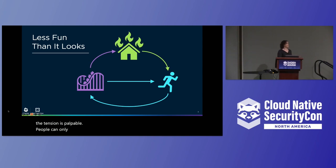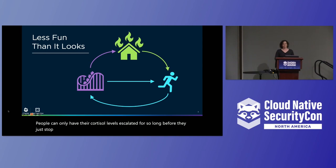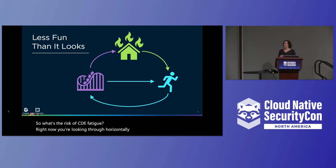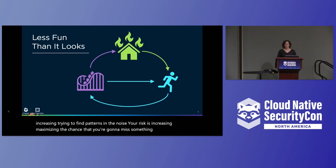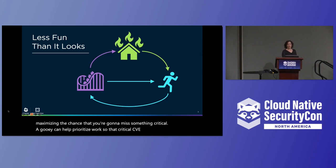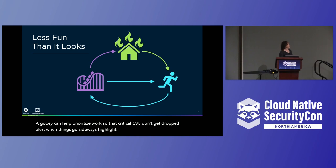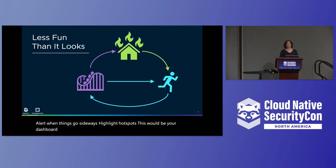The tension is palpable. People can only have their cortisol levels escalated for so long before they just stop caring. So what's the risk of CVE fatigue? Right now, you're looking through horizontally scaled logs, exponentially increasing, trying to find patterns in the noise. Your risk is increasing, maximizing the chance that you're going to miss something critical. A GUI can help prioritize work so that critical CVEs don't get dropped, alert when things go sideways, and highlight hotspots. This would be your dashboard GUI — something that's read-only: give me the highlights, show me something I can take to my manager.